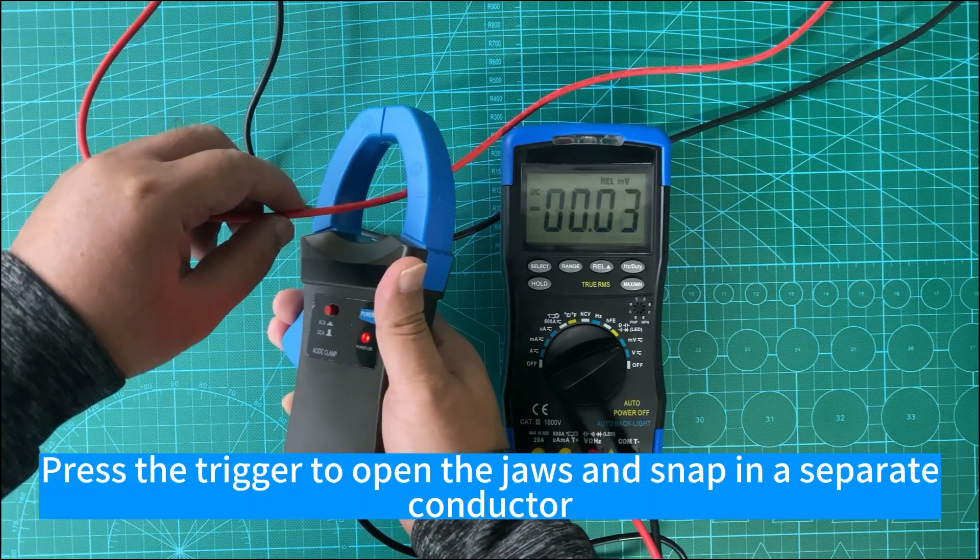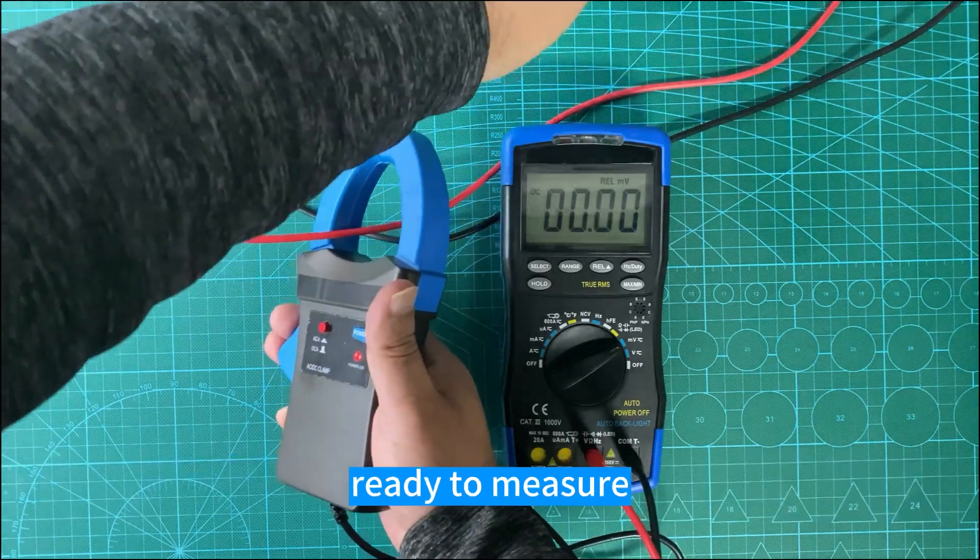Press the trigger to open the jaws and snap in a separate conductor to continue measurement.